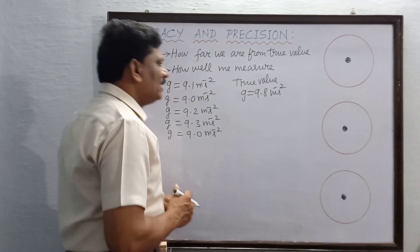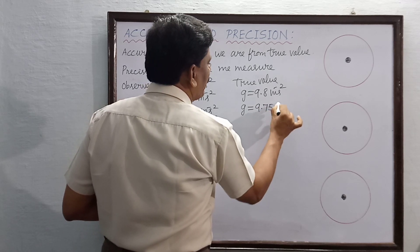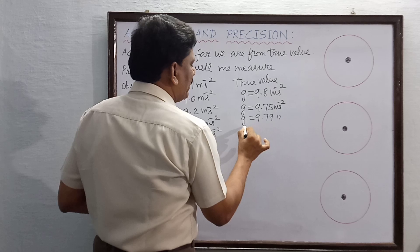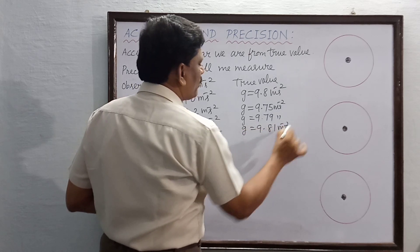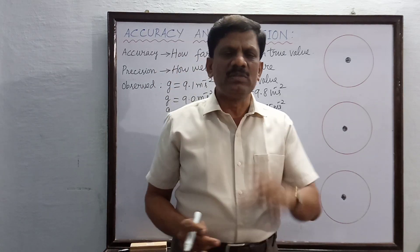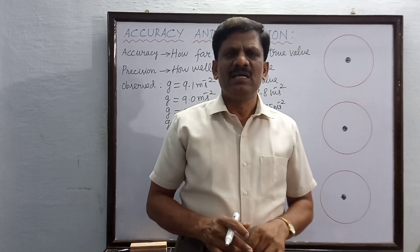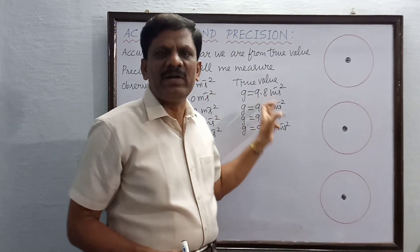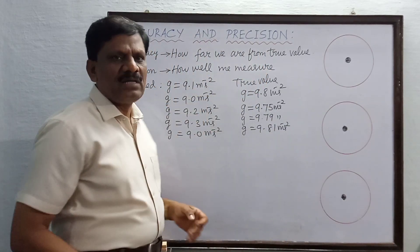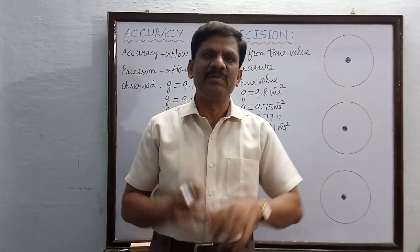Suppose another student does the simple pendulum experiment and gets values: 9.75, 9.79, and 9.81 m/s². These three observations are very close to each other, so the measurement is precise. Also, all these values are closer to the true value of 9.8, so the observations are accurate as well — precise as well as accurate. In the first case, the values were close to each other but far from 9.8, so they were precise but not accurate.